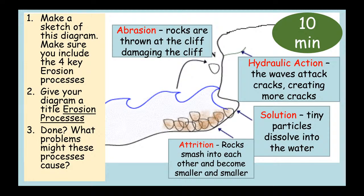Once pieces have been broken apart, they become ammunition in a process called abrasion. The sea can pick up rocks and material and hurl them at the cliffs or other rocks. When they smash into each other, they do damage, and the cliff or coast gets broken down by rocks continually being thrown at it. When these pieces hit the cliff and each other, they also break down themselves — becoming smaller and smaller in a process called attrition. As they smash into each other, they generally become rounder and rounder as the edges are chipped away.